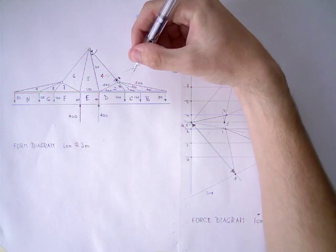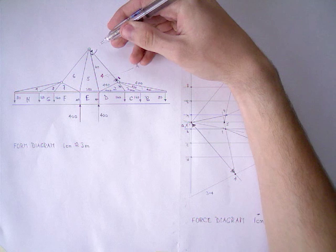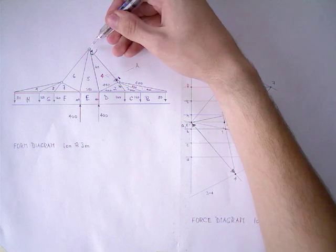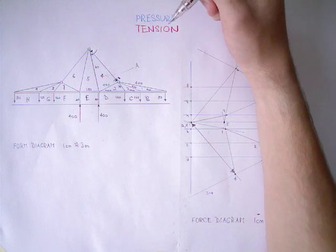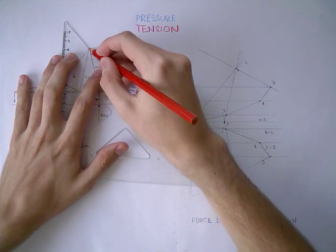Now we see that these two arrows are pointing against each other. That's right, and it means that both of these points are pulled against each other. In other words, this element is under tension. I'm going to mark it red.